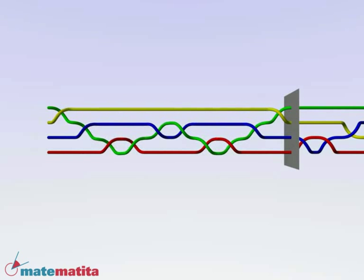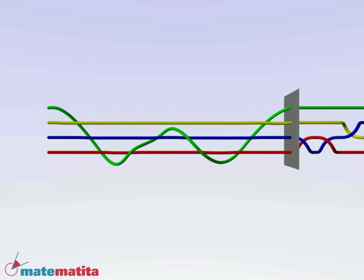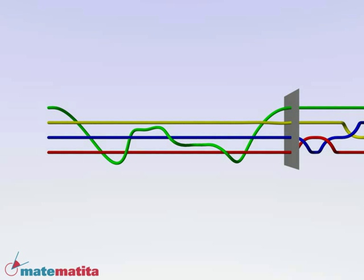We deform the strands so that the green one encircles a strand, passing behind the others, goes back to the initial position, encircles another strand and so on. This piece is combed.